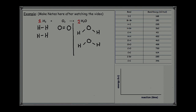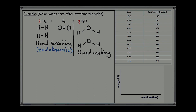Now that we have the displayed formulae I can see the bonds that need breaking and the bonds that need to be made. There is an energy change associated with bond breaking and with bond making. In order to break any chemical bond, energy has to be used up — this energy is absorbed from the surroundings, so bond breaking is an endothermic process. Bond making is the exact opposite and so bond making is an exothermic process that releases energy to the surroundings.